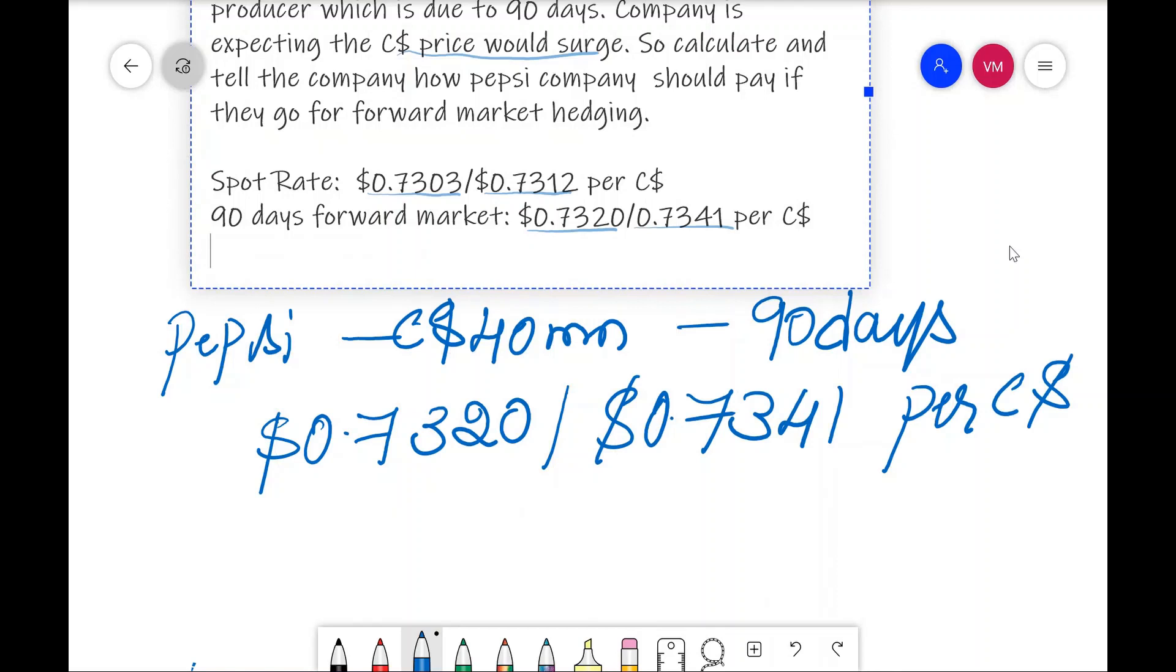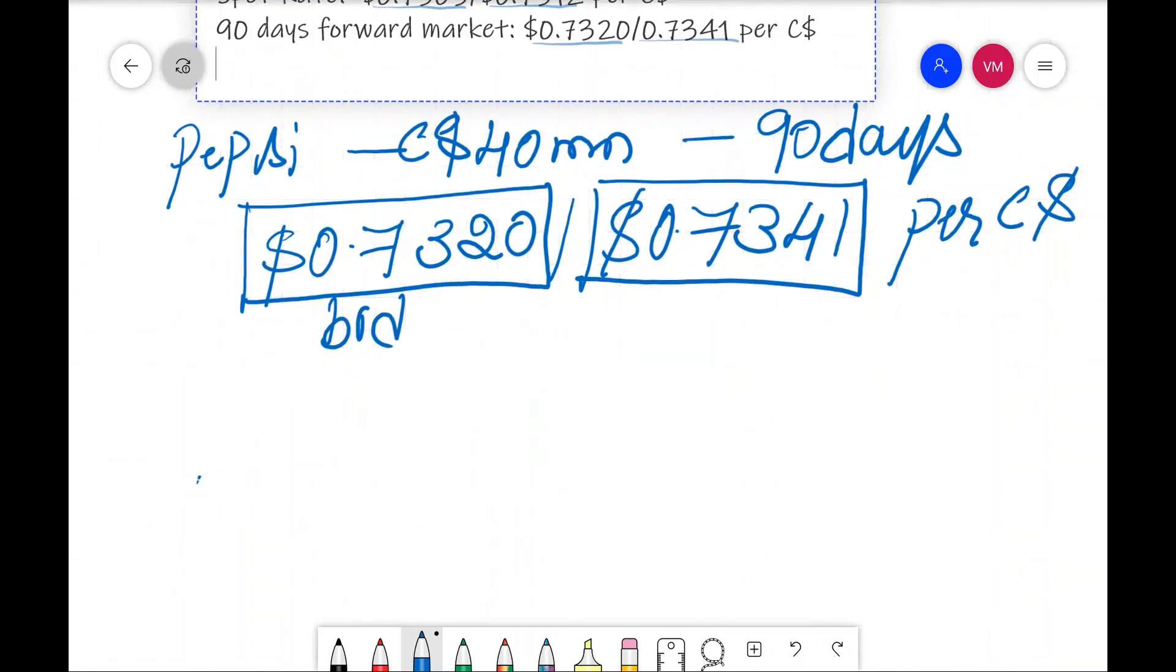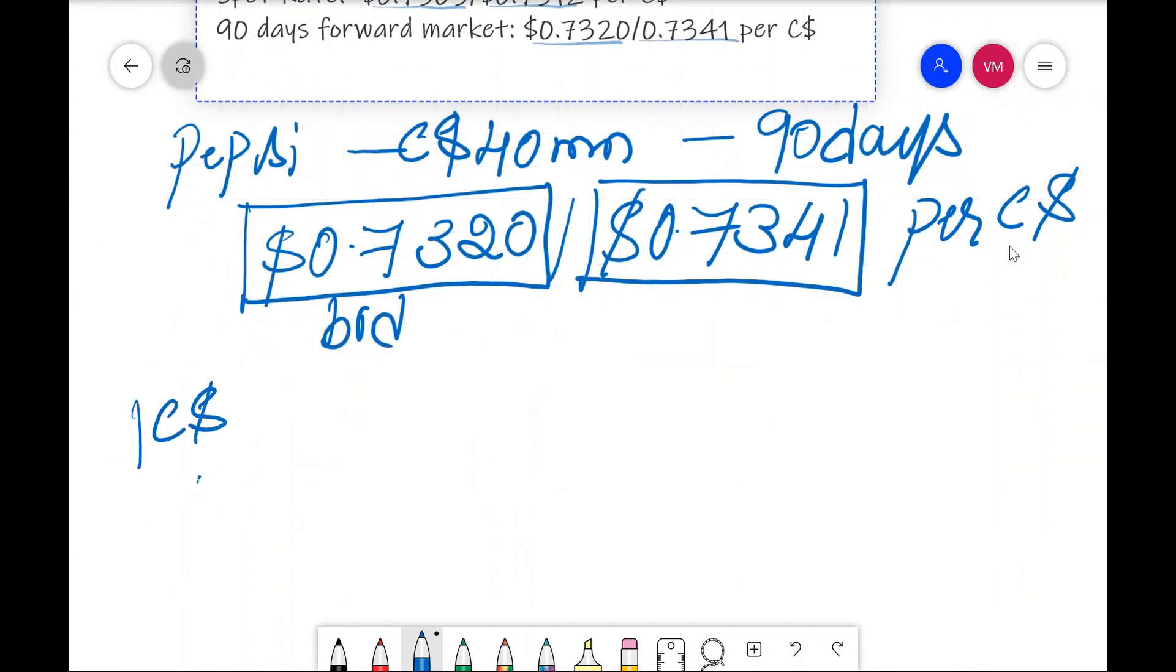That means this quote, this is the bid. This is the ask quote. What is bid? If I sell one Canadian dollar, I am going to get this much dollar, that is 0.7320 dollar. If I want to purchase one Canadian dollar, I need to pay this much dollar, that is 0.7341 dollar.